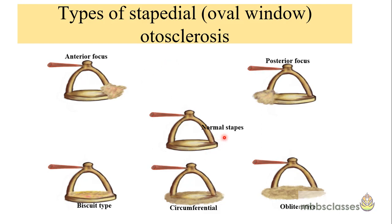Depending on the location and extent of disease, stapedial otosclerosis is divided into different types. The anterior focus involves the anterior part of the stapes footplate; the posterior focus involves the posterior part. The biscuit type is when the lesion involves the whole stapes footplate but the annular ligament is spared. In the circumferential type, the annular ligament is involved while the center is free. The obliterative type is when the whole stapes footplate and annular ligament are obliterated by the lesion.